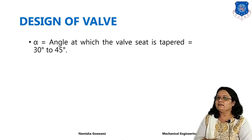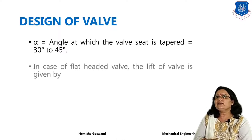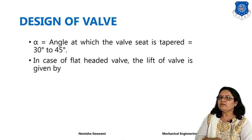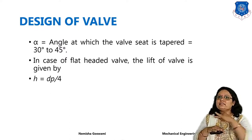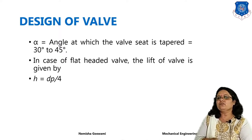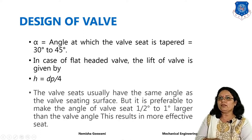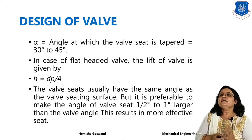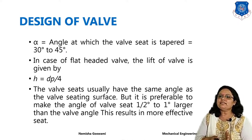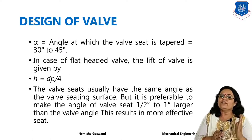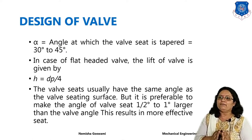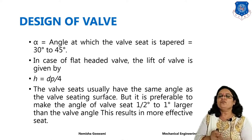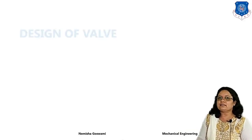Here alpha is the taper angle, generally taken as 30 to 45 degrees. In the case of a flat head valve, since there is no angle, h is directly taken as Dp divided by 2. The valve seats usually have the same angle as the valve seating surface, but it is preferred to make the angle of the seat 0.5 to 1 degree larger than the valve angle, as this results in a more effective seat.